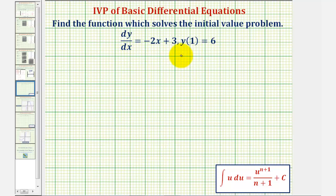Which we'll talk about in the next lesson. But for right now, we should recognize that if we want to find a function that has a derivative of -2x + 3, we should integrate -2x + 3.